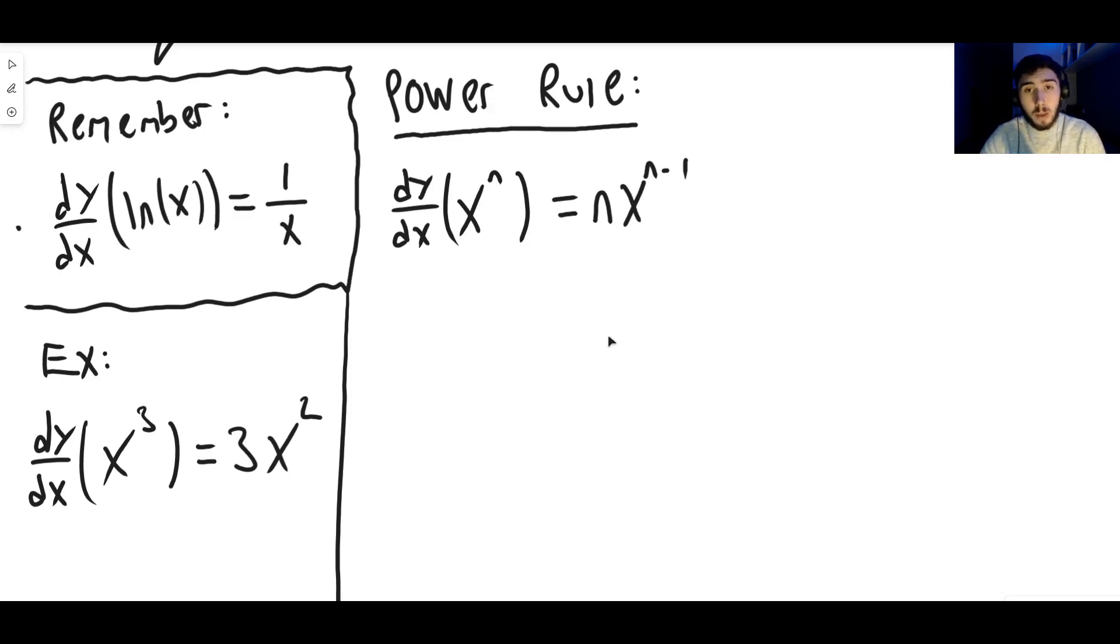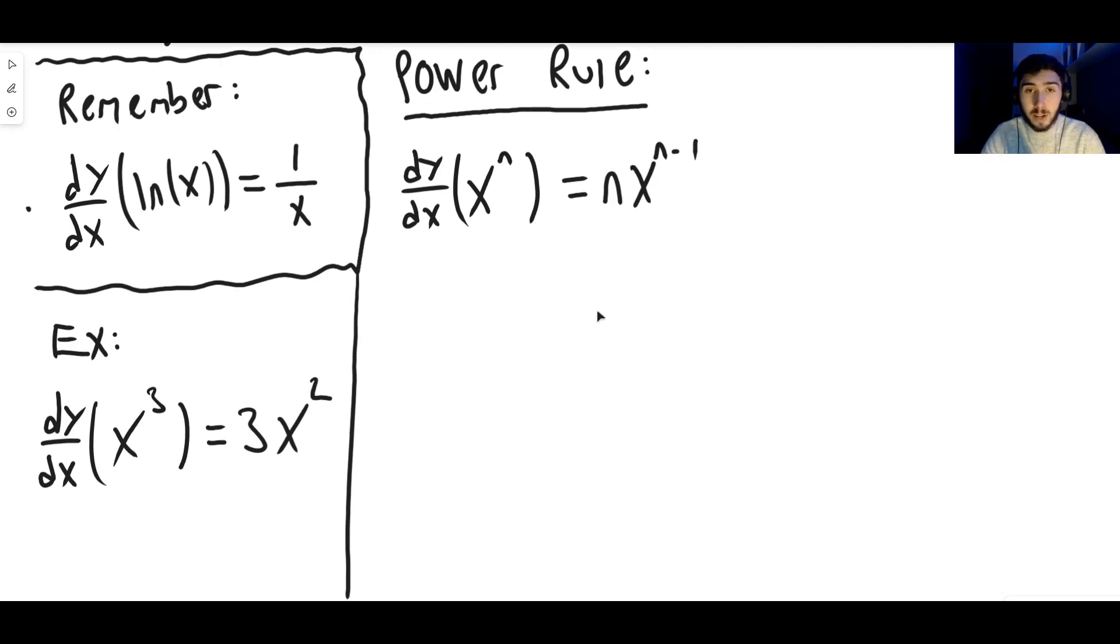And also, those two other methods, the binomial expansion and proof by induction, only apply when n is a natural number, when n is a positive number and a whole number. Whereas this method shows that it works for any real number, which means it could be a fraction or negative or zero or anything like that.